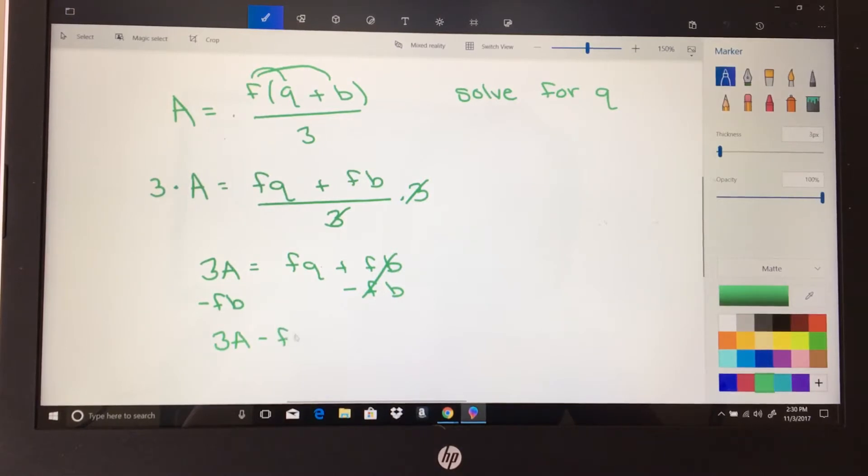And then finally I want q by itself, so I will divide by f. And you can leave the answer like that, or you can divide both of these also by f and say 3A over f minus fb over f, in which case both of these f's would eliminate, so we would just get 3A over f.